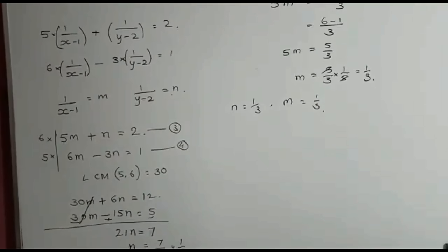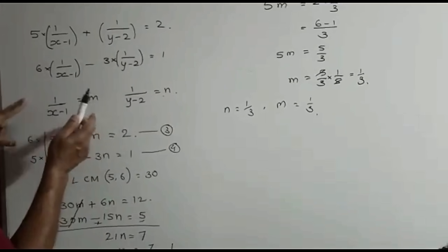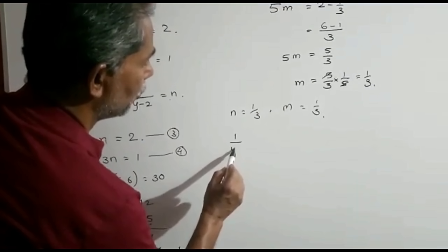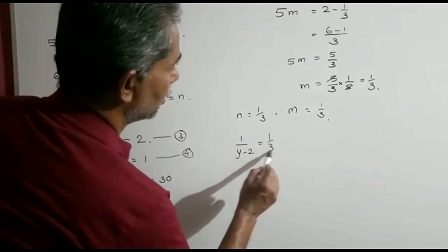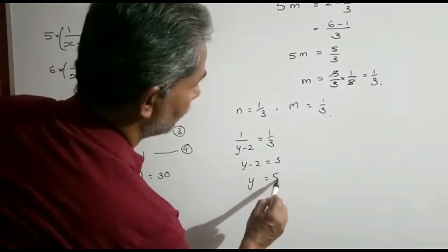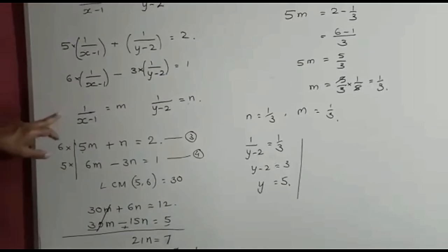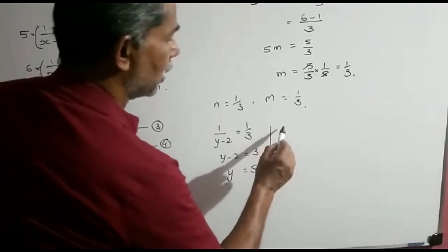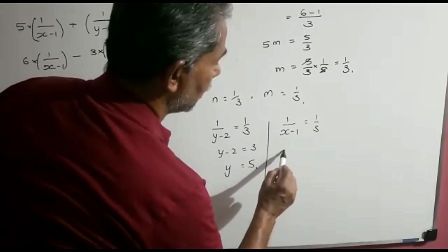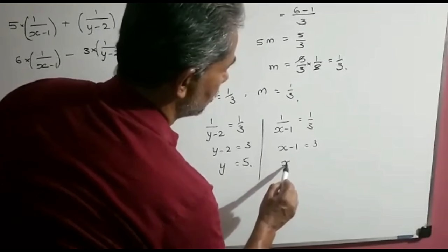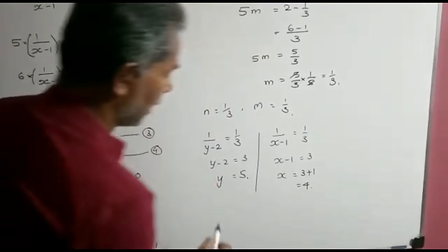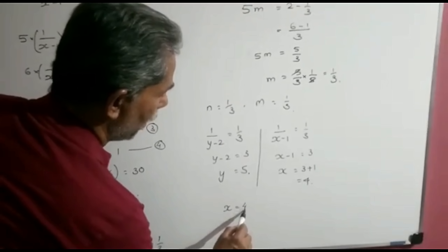So we got the values: n equals 1 upon 3 and m equals 1 upon 3. Substituting back: 1 upon y minus 2 equals 1 upon 3, so cross multiplying y minus 2 equals 3, giving y equals 5. And m equals 1 upon x minus 1 equals 1 upon 3, so cross multiplying x minus 1 equals 3, giving x equals 4. Thus x is equal to 4 and y is equal to 5.